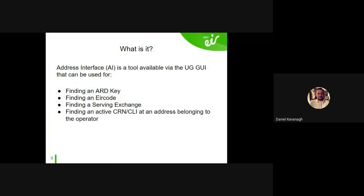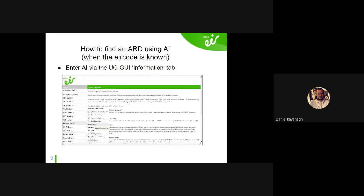Moving on to AI — the Address Interface tool, available in the UG GUI. It can be used for finding an RT, finding an EirCode, finding a serving exchange. You might or might not ever need to use it, but it's handy to have. It can also be used to find an active CLI or CRN address belonging to an operator — so if I'm in Operator A and I log on to AI and search an address, I can see the phone number belonging to that address within my operator's data.